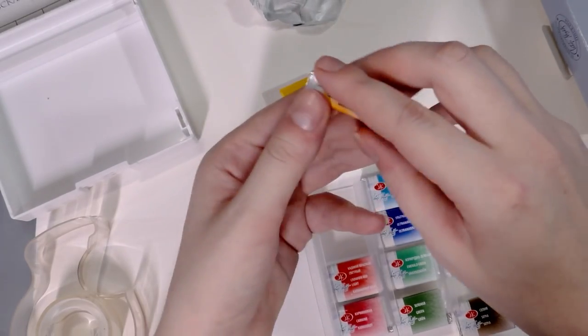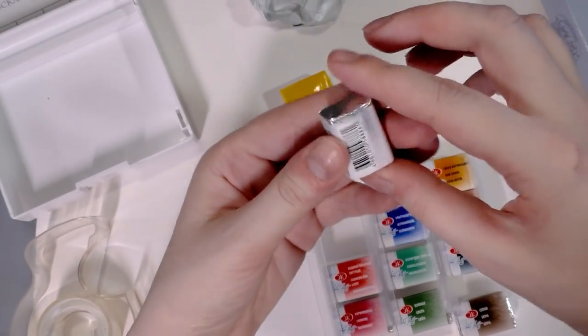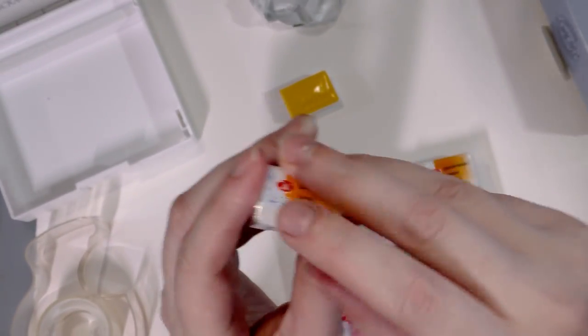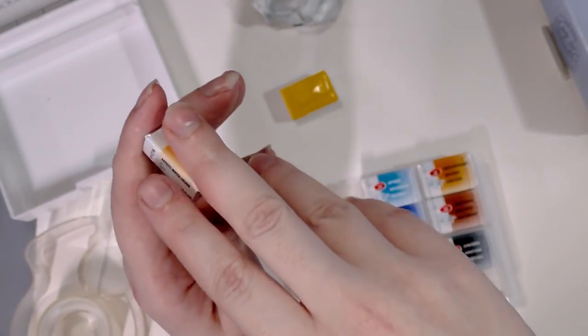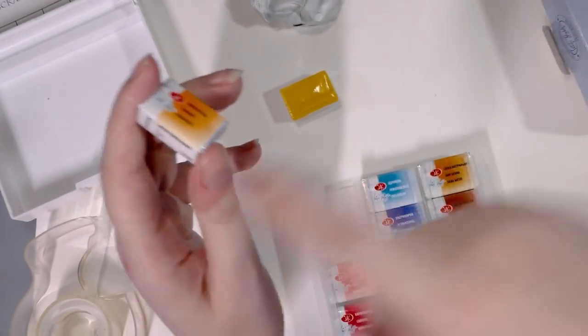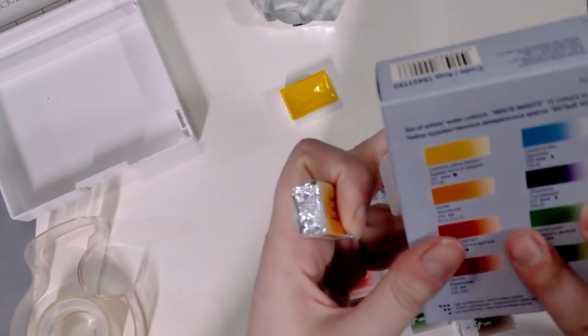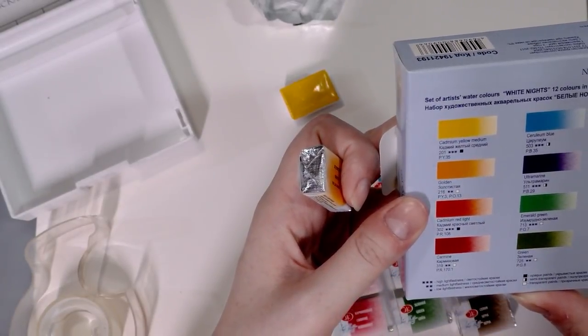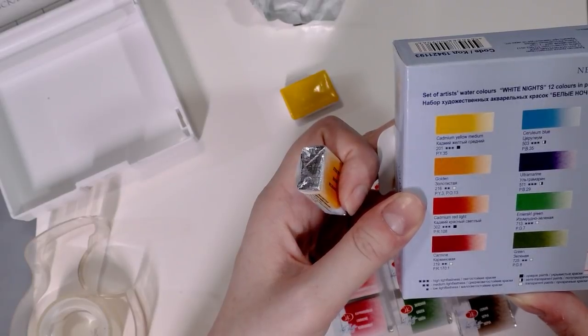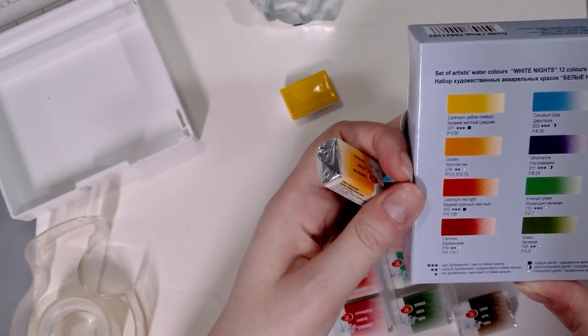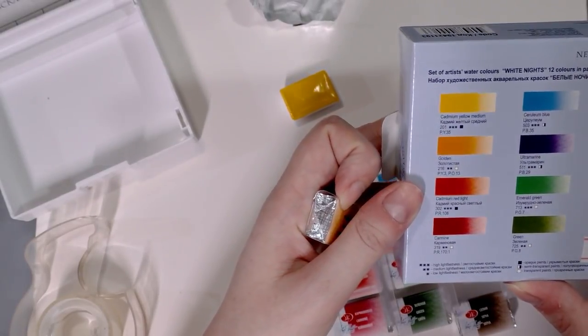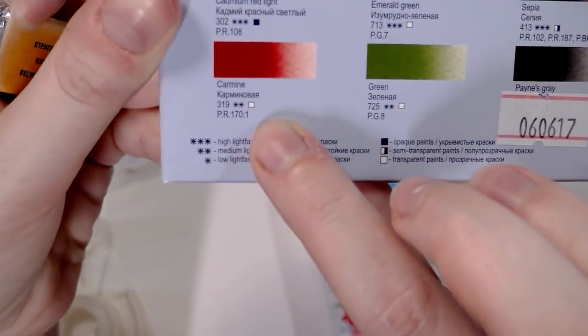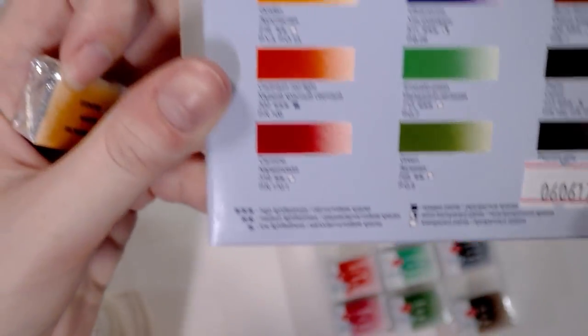So these are their extra fine watercolors, 66 total colors with pigments and light fastness ratings available on the site. The pigment is not listed on here. And it is listed on the box. So cadmium yellow medium is PY35, golden is PY3, PO13, cadmium red light is PR108, carmine is PR107. And then I'm not super sure what that means there. It's like a ratio maybe.